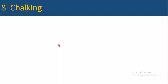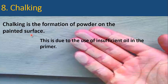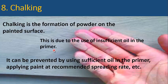Chalking is the formation of powder on the painted surface. This is due to the use of insufficient oil in the primer. It can be removed by using sufficient oil in the primer and applying paint at the recommended spreading rate.